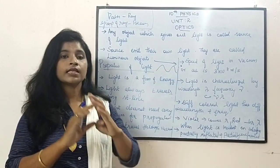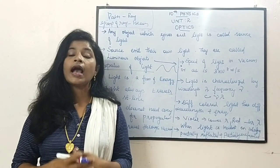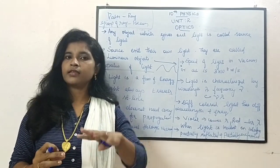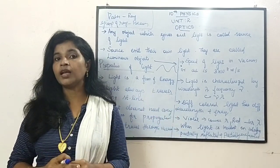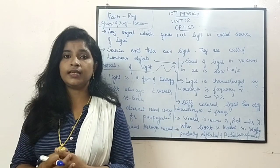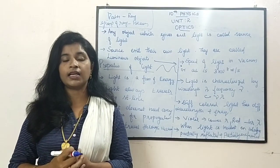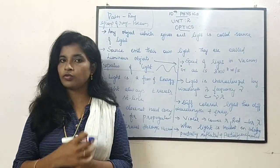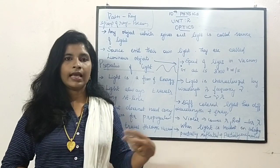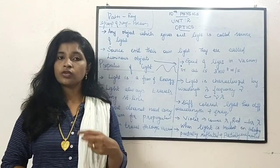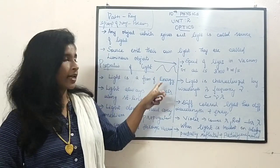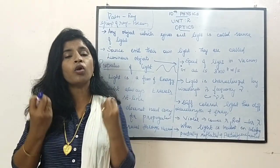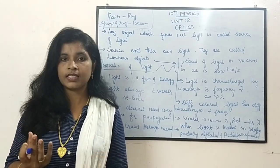They told that light is in the form of a wave. After that, they proposed that light is not only having the wave nature — it is having the particle nature. It is behaving as a particle, and those particles are called as photons. You might have studied about particles like electrons, protons. They are telling that light is having all the natures of a particle.